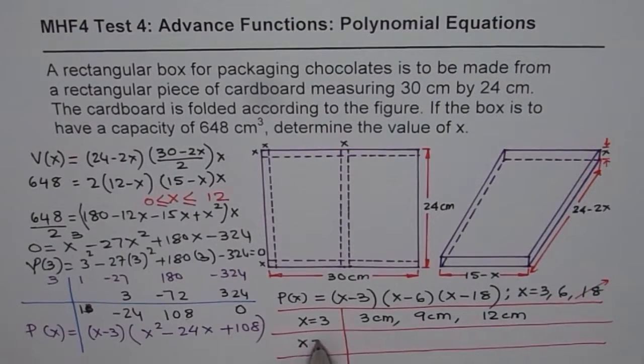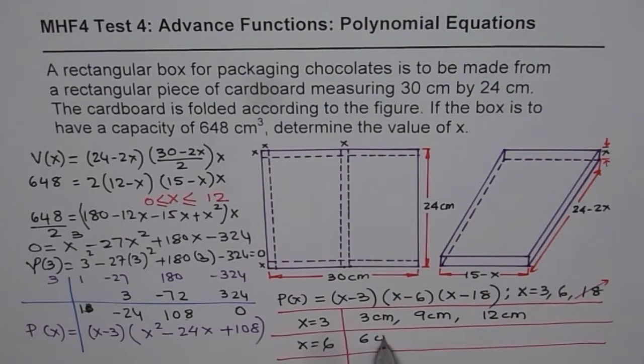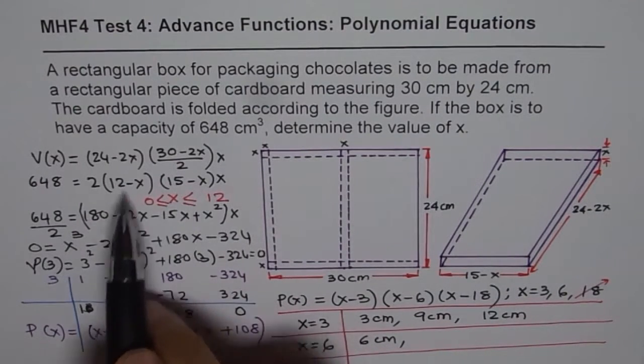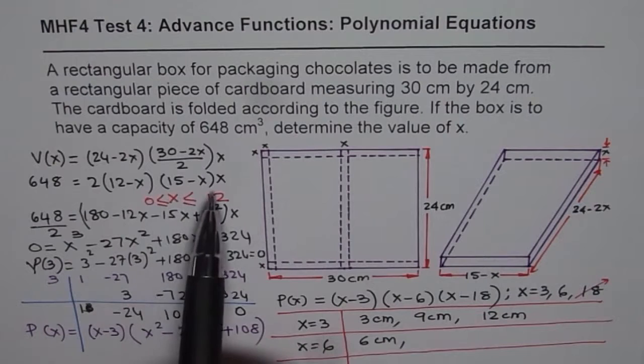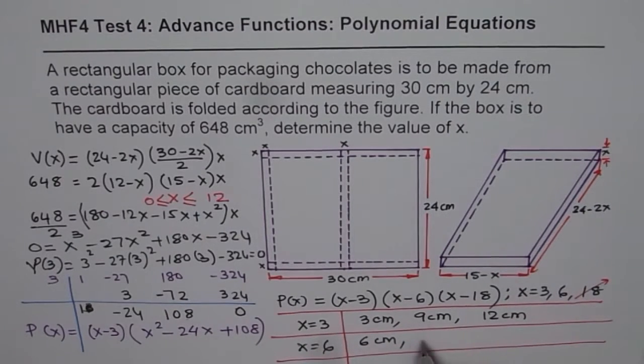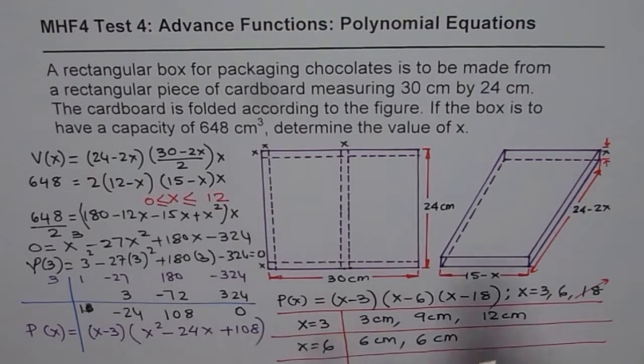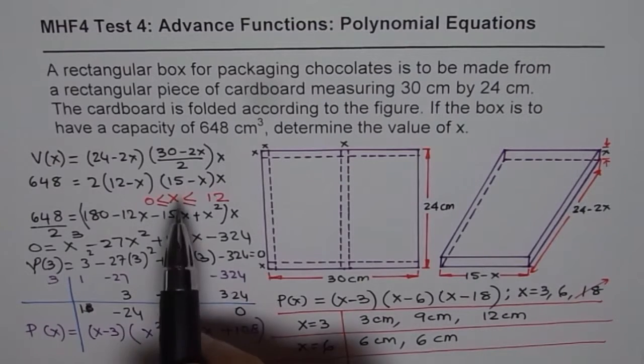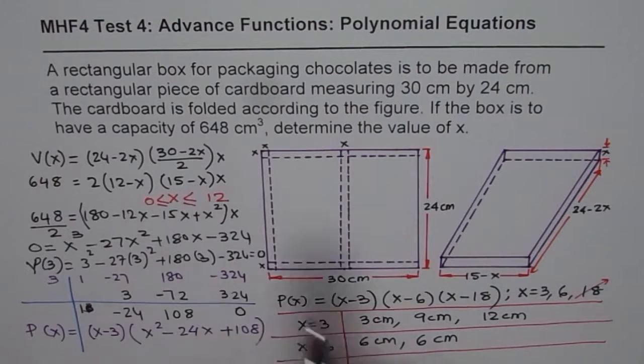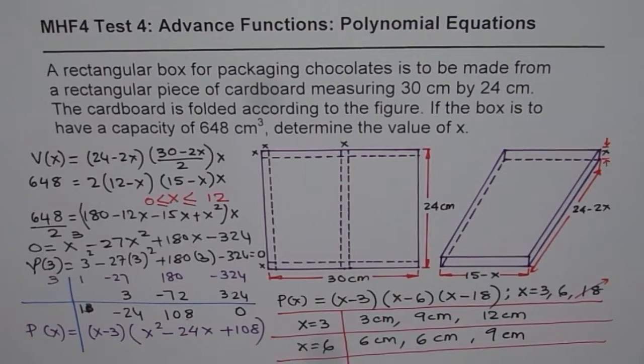If you put x equals to 6 in your formula, x is 6. So you get 6 centimeters. These are actually your length, width, and height. Now when you plug in 6, you get this. When you plug in 6 here, 12 minus 6 is 6 centimeters. And 15 minus 6 will give you 9. No, it's 15 minus 6 will give you 9. So again, 9 centimeters.